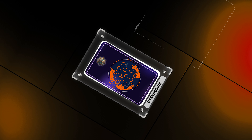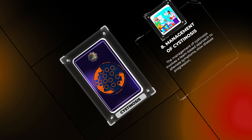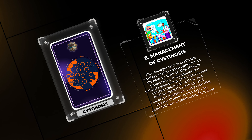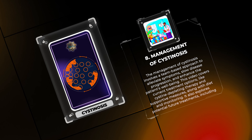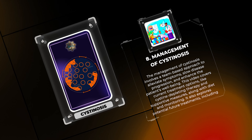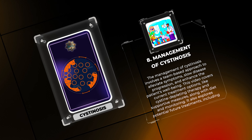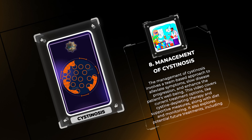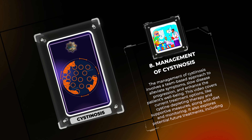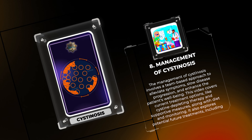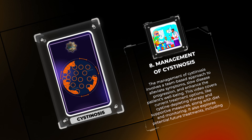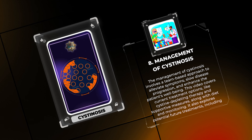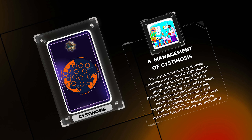The management of Cystenosis involves a team-based approach to alleviate symptoms, slow disease progression, and enhance the patient's well-being. This video covers current treatment options like cysteine-depleting therapy and supportive measures, along with diet and monitoring. It also explores potential future treatments, including gene therapy.